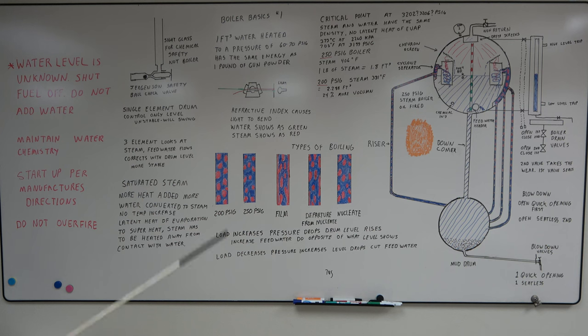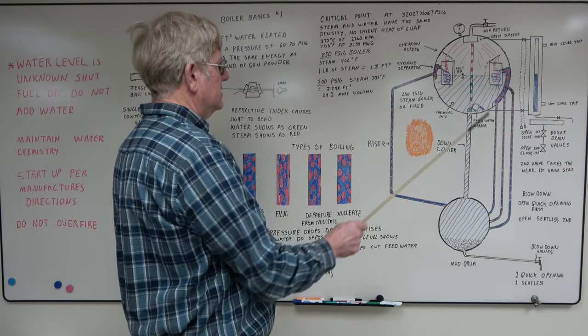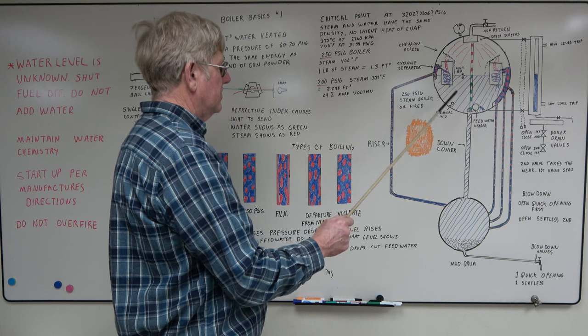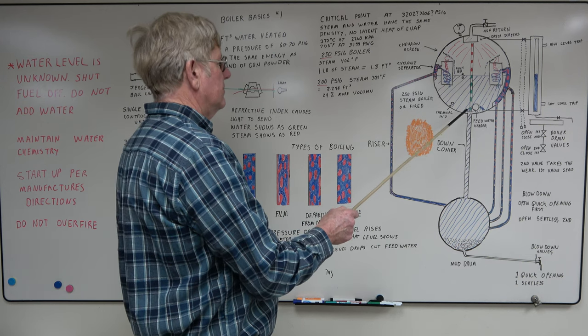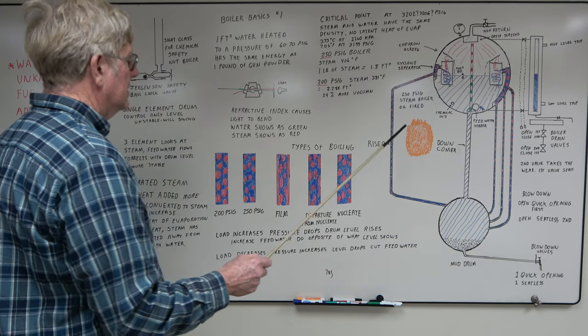Okay, the most important part of this whole thing, the one thing that everybody really, really needs to understand. If water level is unknown, shut fuel off. Do not add water. This has killed more people than about anything with boilers. So if you walk up to a boiler, this is all red, you don't know what the sight glass is, you just walked up to it, trip it, shut the fuel off. Add water to this thing could cause an explosion.